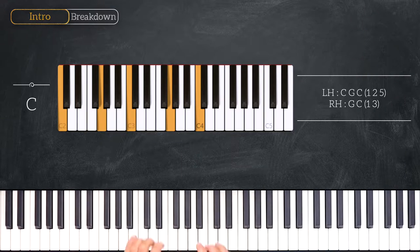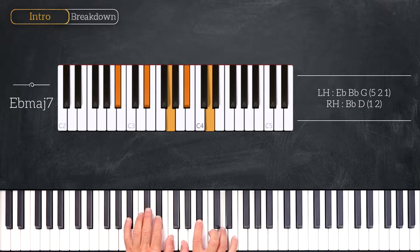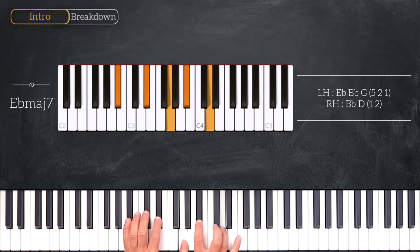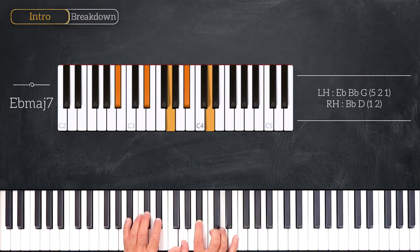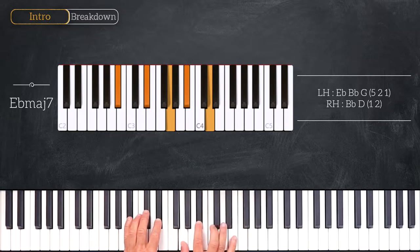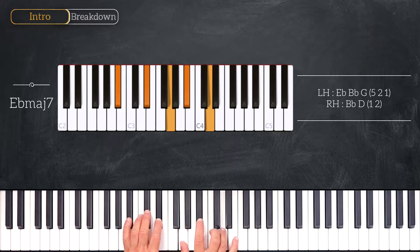Then right after we'll play this E-flat major 7 chord. Here we are on the third degree of the scale and the root note would be this E-flat. We have B-flat, E-flat on the left hand and G, B-flat, D on the right hand. The bass note of this chord is just the fifth of the chord.